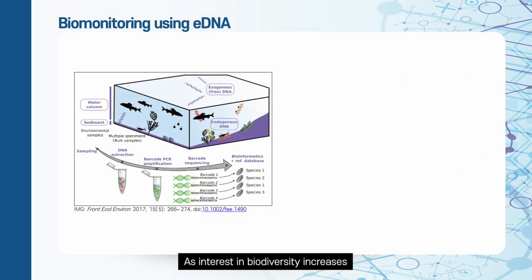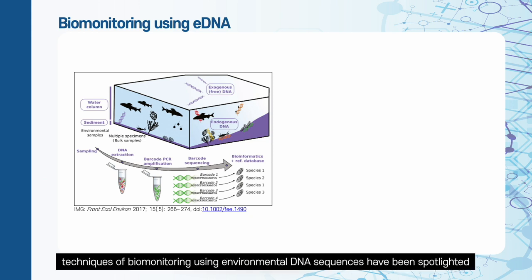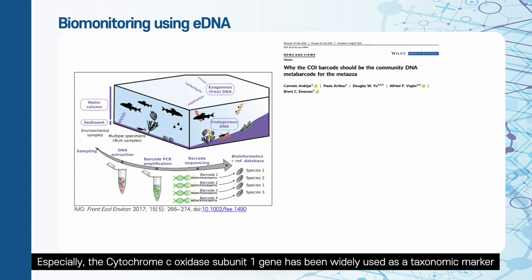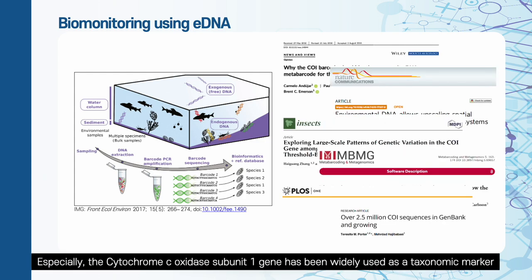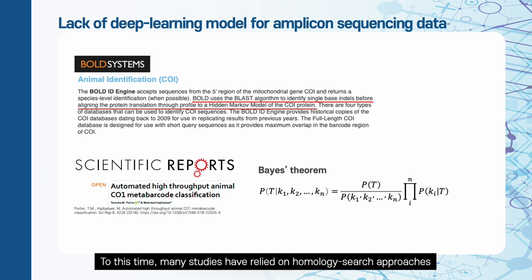As interest in biodiversity increases, techniques of biomonitoring using environmental DNA sequences have been spotlighted. Especially, the cytochrome C oxidase subunit 1 gene, or COI gene, has been widely used as a taxonomic marker. To this time, many studies have relied on homology search approaches such as BLAST against the large database of COI genes. It's a time-consuming approach for analyzing large data.